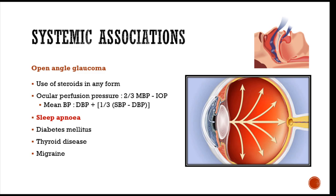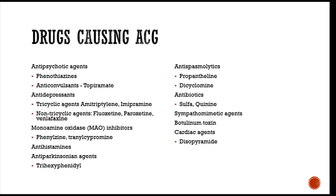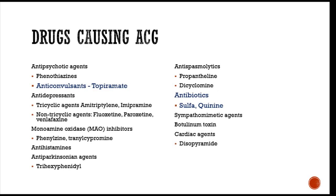Other minor associations for open angle glaucoma include diabetes, thyroid, and migraine. For angle closure glaucoma, there are not many systemic associations, but several drugs can cause it, the most important being topiramate and sulfa drugs.